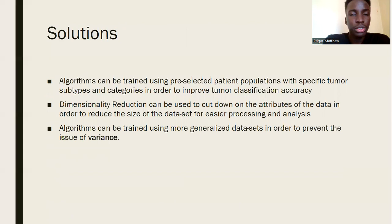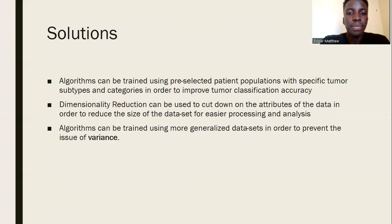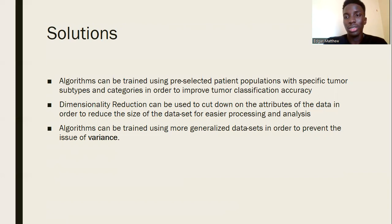Solutions to these technical challenges include pre-training the algorithms to increase accuracy. We'll focus on supervised learning, training the algorithm with pre-selected classified tumors. Dimensionality reduction will reduce the size of the data set and attributes to work with. Algorithms should also be trained with more generalized data sets to prevent the issue of variance — we won't overly train an algorithm on a specific data set.